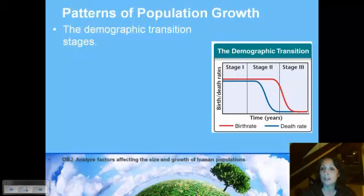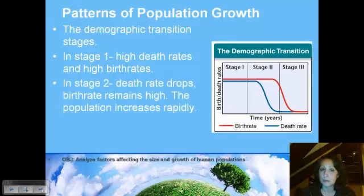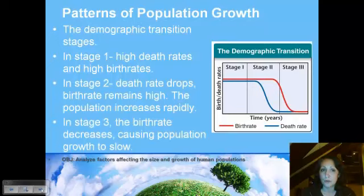Here in the United States, we've reached stability — we're really not growing anymore. If you look at the world population, however, it's still in stage one or stage two. Stage one has high death rates and high birth rates, giving a straight line. In stage two, the death rate drops but the birth rate remains high, so the population increases rapidly with exponential growth. Finally the birth rate will decrease and we'll get back to a stable population.